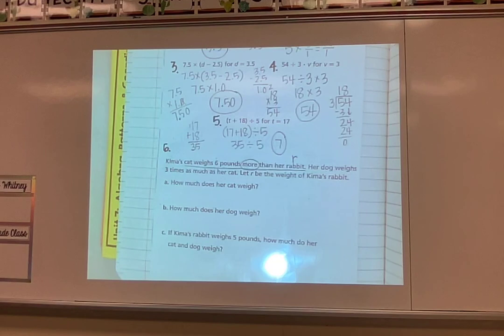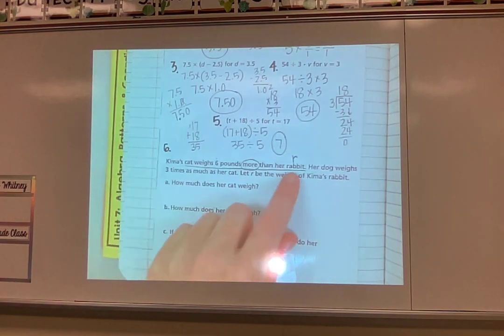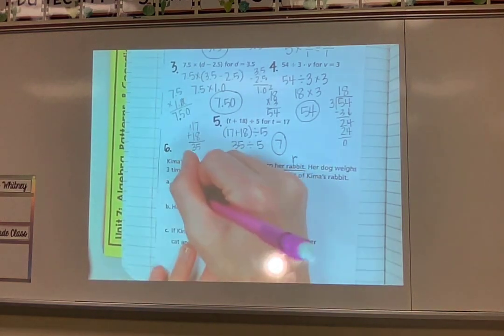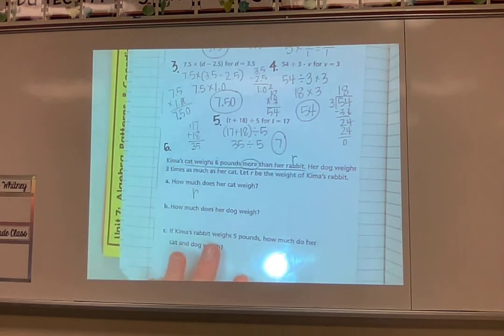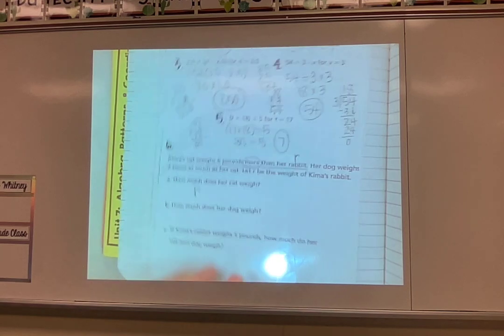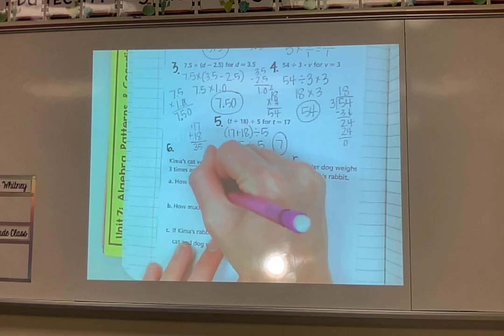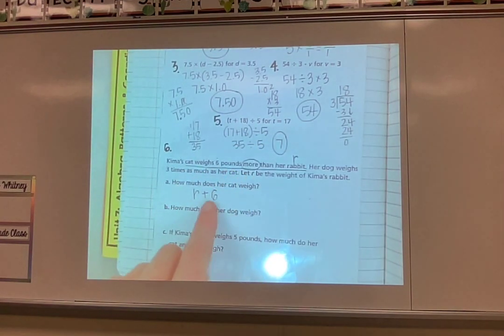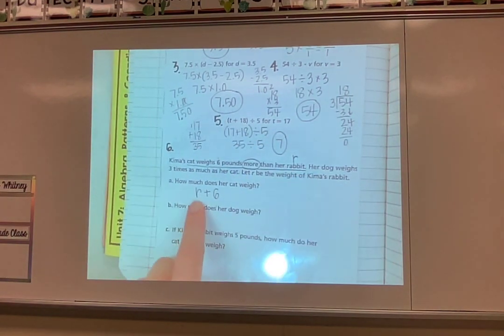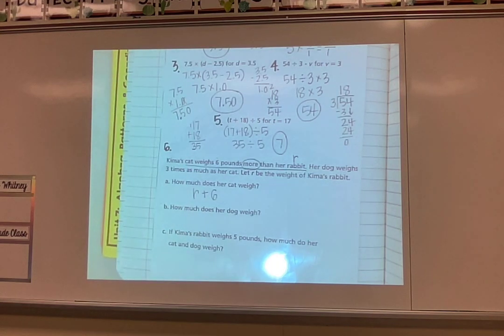So I need to think, how would I figure out how much her cat weighs? Well, it weighs more than her rabbit. So I'm going to take the R because that's the rabbit. And if it weighs more, I would add 6 pounds because the cat weighs 6 pounds more than the rabbit. So I would take the rabbit, and I would add 6 more pounds, and that would tell me how much the cat was. I can't solve it yet because I don't know what R is, but I'm not supposed to solve it. I'm just supposed to make a little equation, which is what we just did.